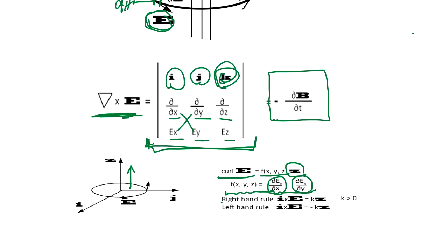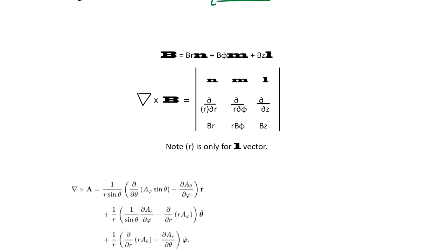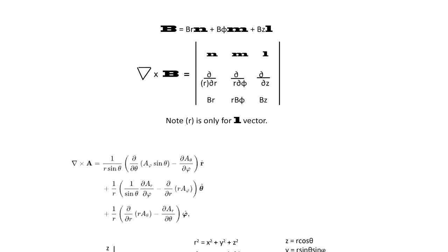And that's defined so-called right-hand rules and left-hand rules. Depends on, you know, Faraday's law or Ampere's law. Okay. Now in physics, we often use polar coordinate. And this is a polar coordinate curve theorem.